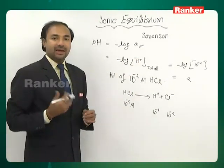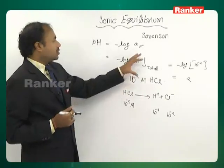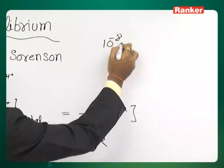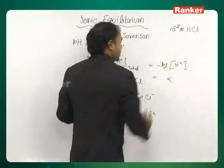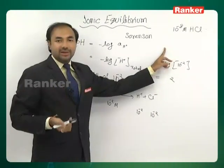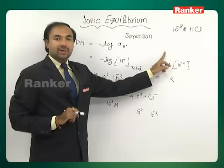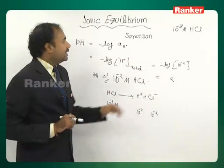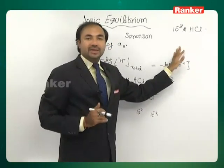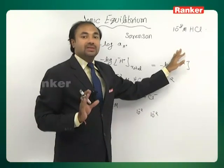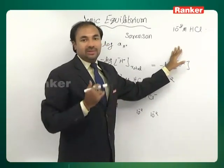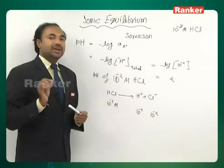This example looks very simple, and it is simple. But we can get complicated cases, like: find the pH of a 10⁻⁸ molar HCl solution. The logical but incorrect answer is pH = -log(10⁻⁸) = 8. But there is a pH scale, and if pH = 8 at 25°C, that means the solution is basic. HCl being an acid, it is impossible for it to give a basic solution.